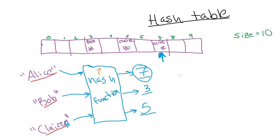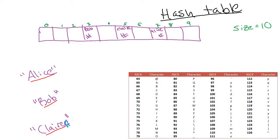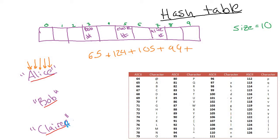One way to implement the hash function is to take the string passed in, find the ASCII code of each letter, and add them all together. Looking up the ASCII codes: for Alice, uppercase A is 65, lowercase l is 108, lowercase i is 105, lowercase c is 99, and lowercase e is 101. We add all those ASCII codes together to get a large number, then take that number modulus by 10 — the table size — which ensures the result is between zero and nine.